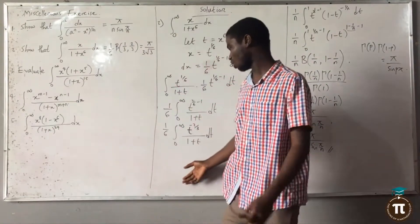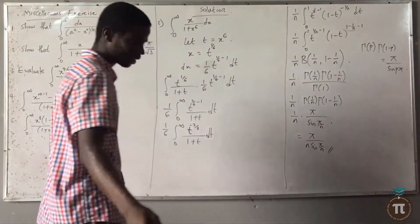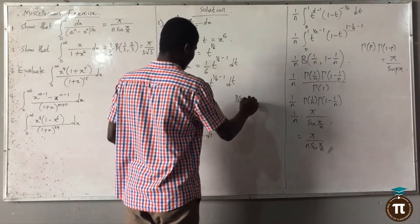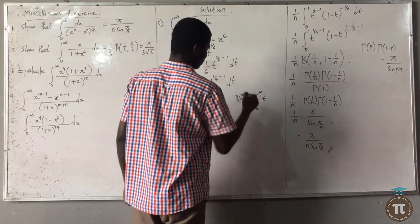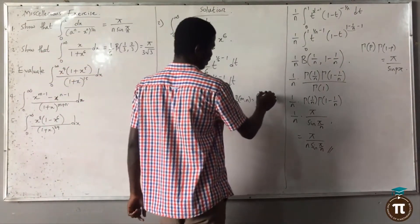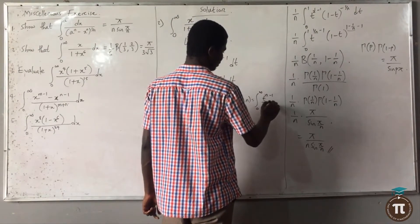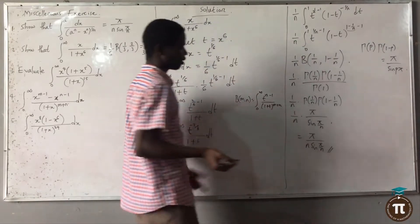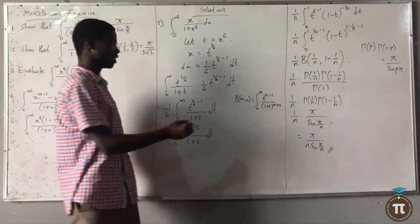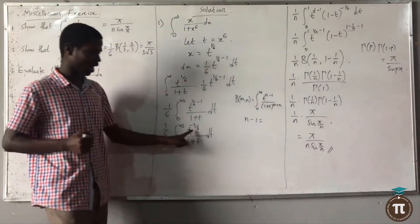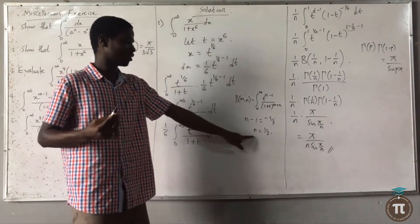This equals 1/6 times the integral from 0 to infinity of t^(-2/3) over (1 plus t) dt. Recall that the beta function can be expressed as Beta(m, n) equals the integral from 0 to infinity of t^(n-1) over (1 plus t)^(m+n) dt. So n minus 1 equals -2/3, meaning n equals 1/3.